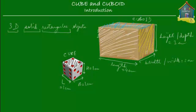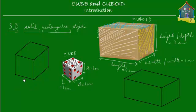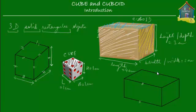Here I have a cube and a cuboid — the kind we will be using when we solve problems. As you can see, the cube has a length, a breadth, and a height which are all of the same size — they're all equal. Whereas in the cuboid, the length is different from the height, which is different from the breadth.